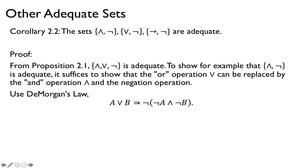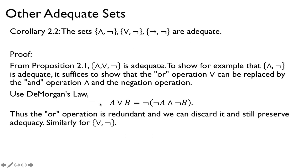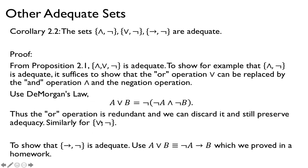Similarly, we can show that {or, not} is adequate by doing the same thing with the other version of De Morgan's Law. To show that {conditional, not} is adequate, we replace OR with the conditional — since A or B is equivalent to not-A implies B. A or B is true if one or the other is true: if we don't have A, then we should have B — that's what the conditional says. So this shows that adequacy holds with only two connectives if you pick the right ones.